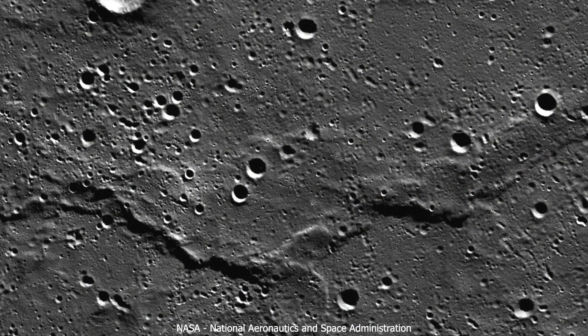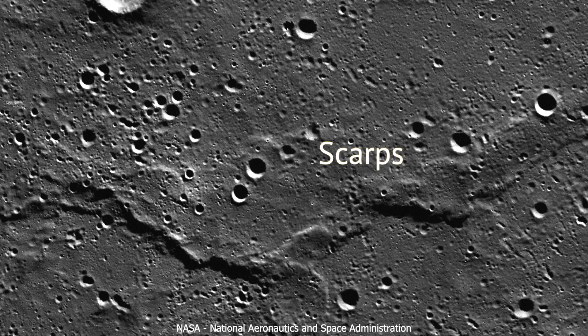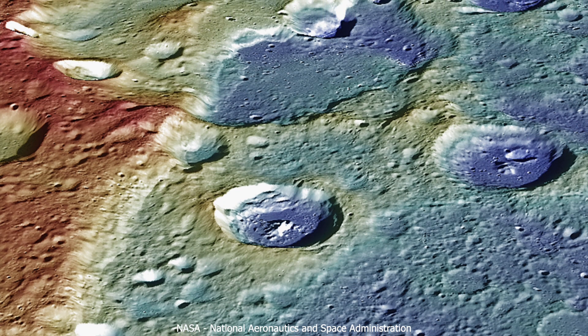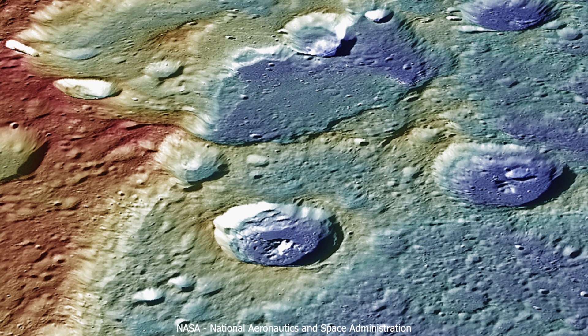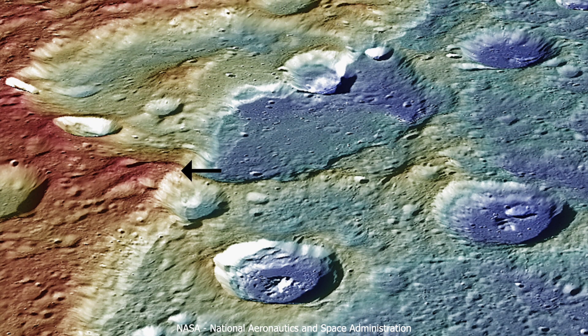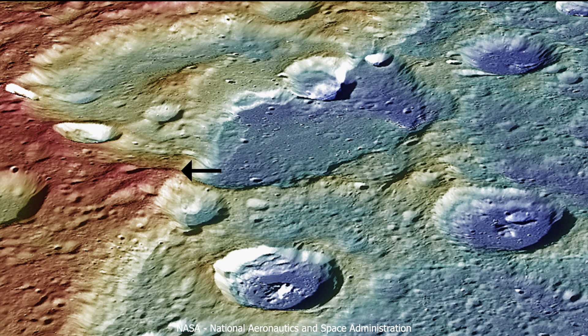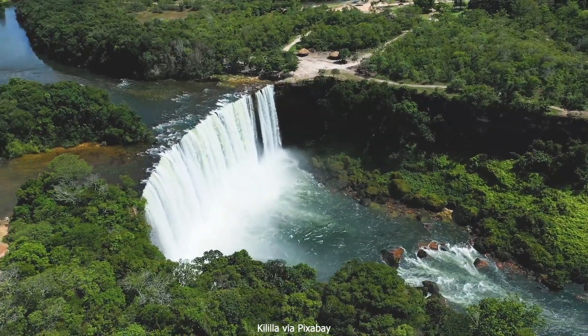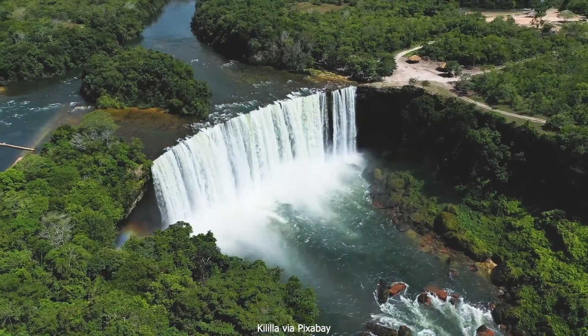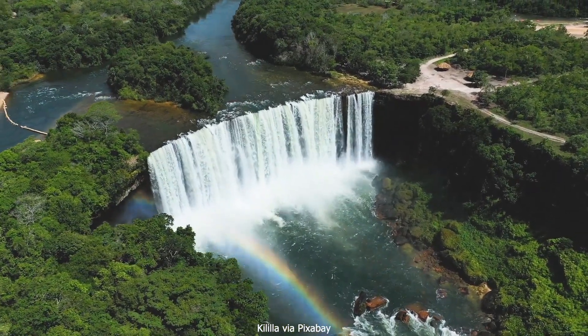There are also numerous cliff faces called scarps, some of which run for over 1,000 kilometers. In this false color image, red represents high terrain, and blue is low terrain. A scarp is clearly visible, and it reaches 3 kilometers high. Cliffs of this magnitude cannot exist on the surface of Earth, because they would quickly crumble under the influence of gravity and the weather.